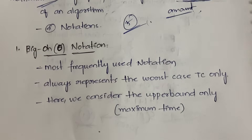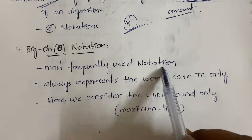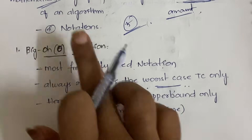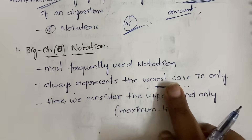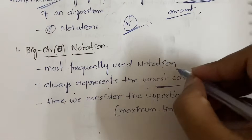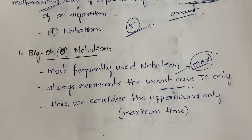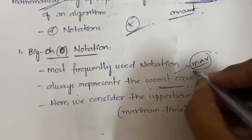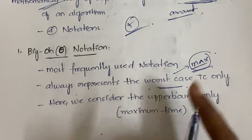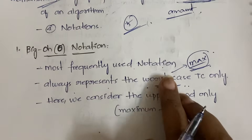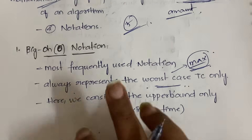The first notation is Big O. It is the most frequently used notation and it always represents the worst case time complexity — that is, the maximum time an algorithm is taking. It is more frequently used because if you are considering maximum time, it covers everything: minimum time, average time, and maximum time.